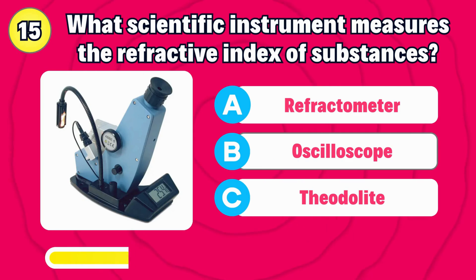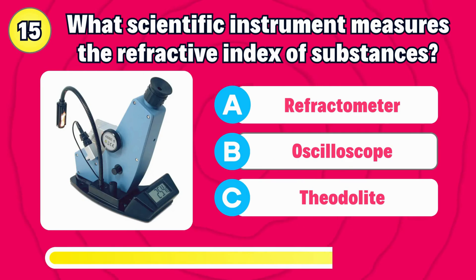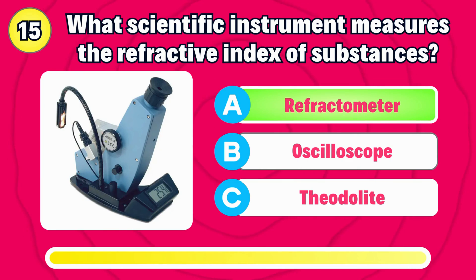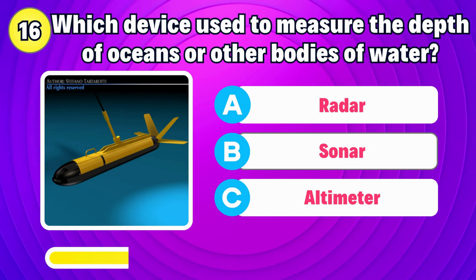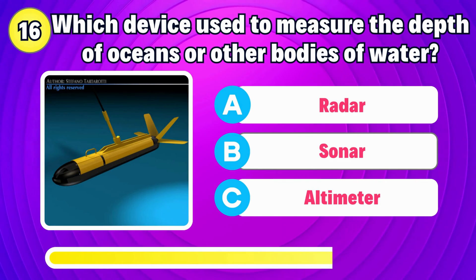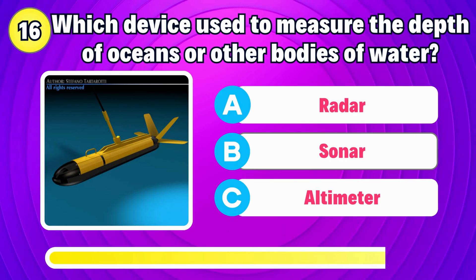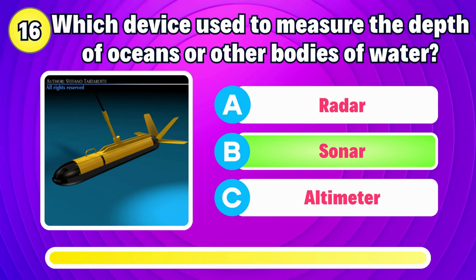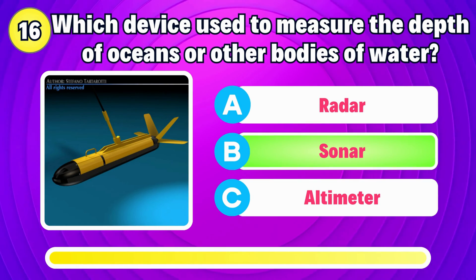What scientific instrument measures the refractive index of substances? The correct answer is refractometer. What is the device used to measure the depth of oceans or other bodies of water? Correct, it's sonar.